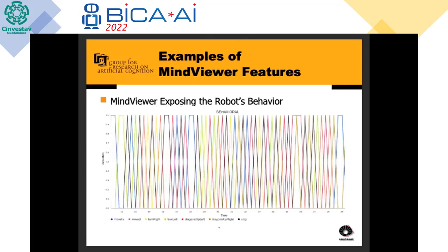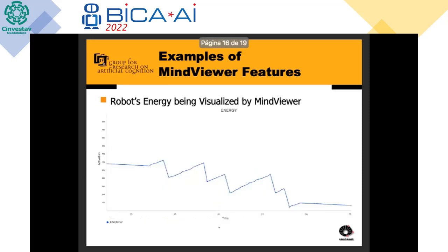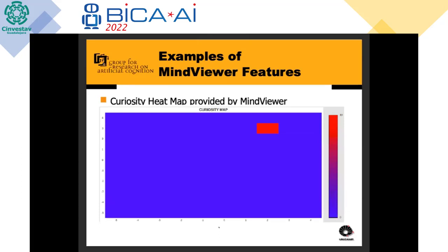We can also monitor the different actions being taken by the robot at each moment, visible in a moving window. We can see these things happening in real time — for example, the robot's energy level visualized by the Mind Viewer, or the curiosity heat map it provides. We can see that at a particular point there is great curiosity near where a power station is located.